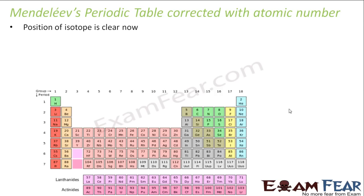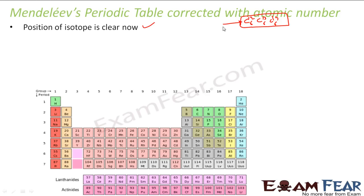Using atomic number corrected everything. The first advantage is the position of isotopes is now clear. Isotopes have the same atomic number — for example, carbon-12, carbon-13, and carbon-14 all have atomic number 6. Since they have the same atomic number, there is only one place for carbon. Since the table is no longer based on atomic mass, there is no confusion about isotopes.